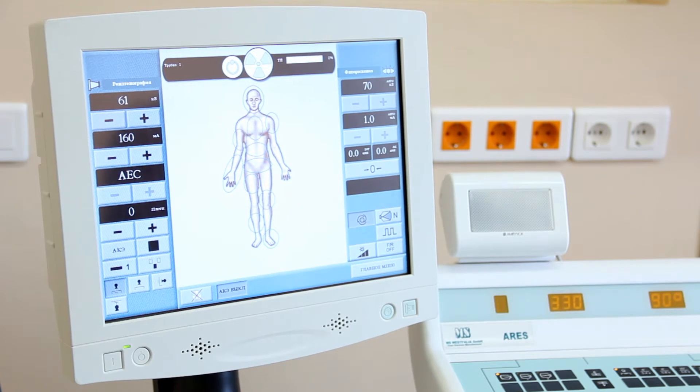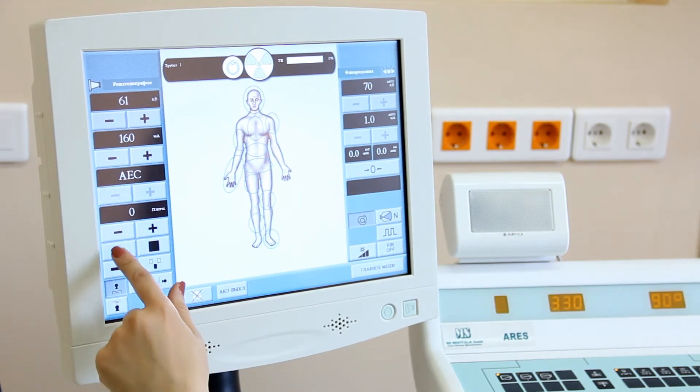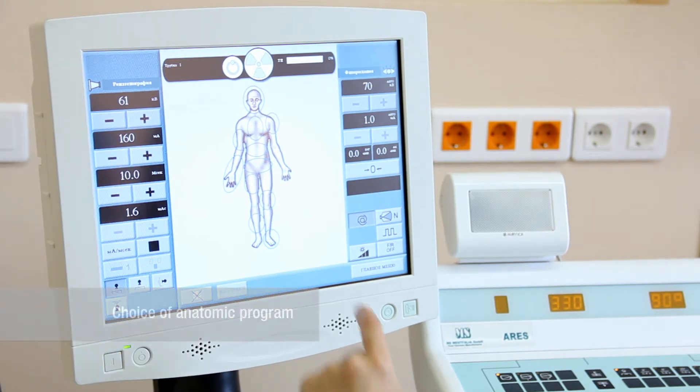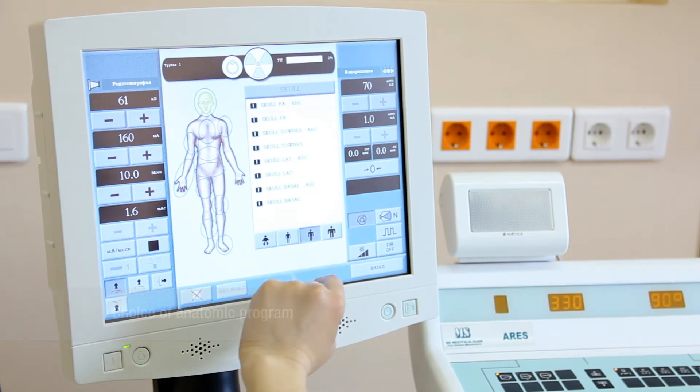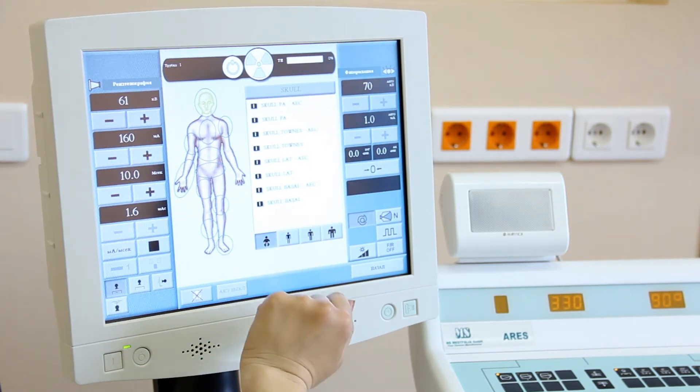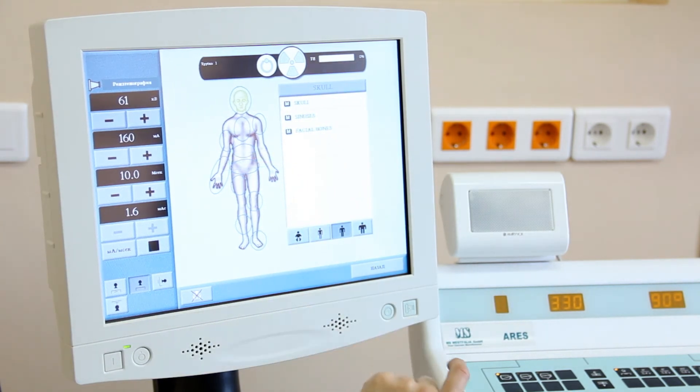Centrally located body scheme allows choosing necessary anatomic areas for screening. The age and body size differentiation option helps selecting optimal parameters for reducing radiation dose and saving image quality at the same time.